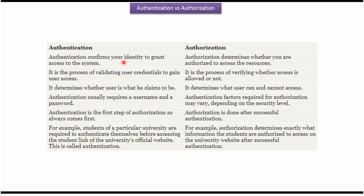Authentication confirms your identity to grant access to the system. Authorization determines whether you are authorized to access the resources. Authentication is the process of validating user credentials to gain user access. Authorization is the process of verifying whether access is allowed or not. Authentication determines whether the user is who they claim to be, and authorization determines what the user can and cannot access.